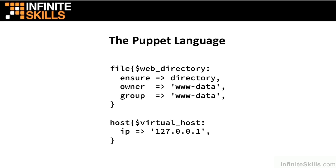For example, this definition of a web directory can apply on a Linux system, a Mac OS X system, and even a Windows system. In the modules we create, we can identify a type called a file and leave it to the type and provider system of the Resource Abstraction Layer to do the work of creating that file. The same is true for identifying a local network host — for example, a virtual host in a web application using a local IP. We define what we want, not the steps taken to define it, and a provider underneath handles the rest regardless of operating system.